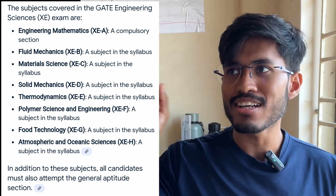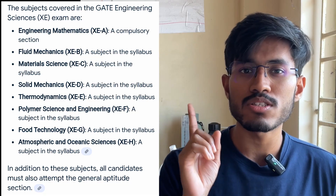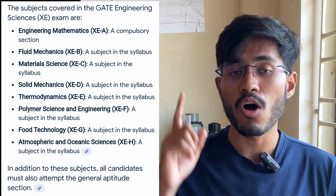This paper is very unique because in any other GATE paper you will have at least 8 to 9 subjects — if you are from mechanical engineering, you have 12 to 13 subjects. But in this paper, you will have to prepare for only four subjects total: aptitude, engineering mathematics, and two subjects of your choice from the available list.